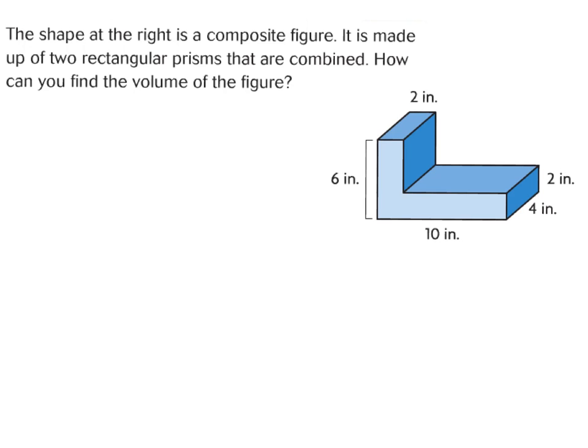Let's take a look at this figure right here. The shape at the right is a composite figure — it is made up of two rectangular prisms that are combined. How can you find the volume of the figure? The strategy I'll be teaching you today is breaking up this figure into two rectangular prisms, using our dimensions to find the two volumes, and then combining them to find the total volume.